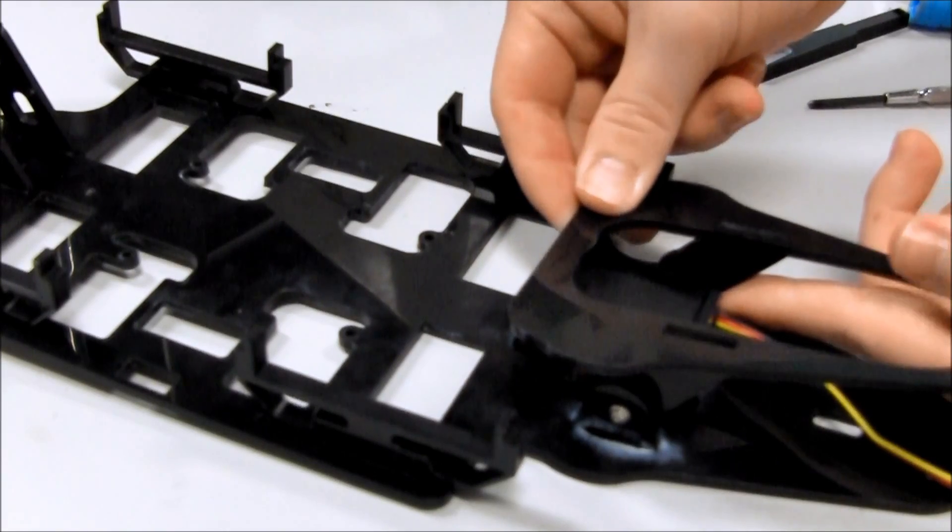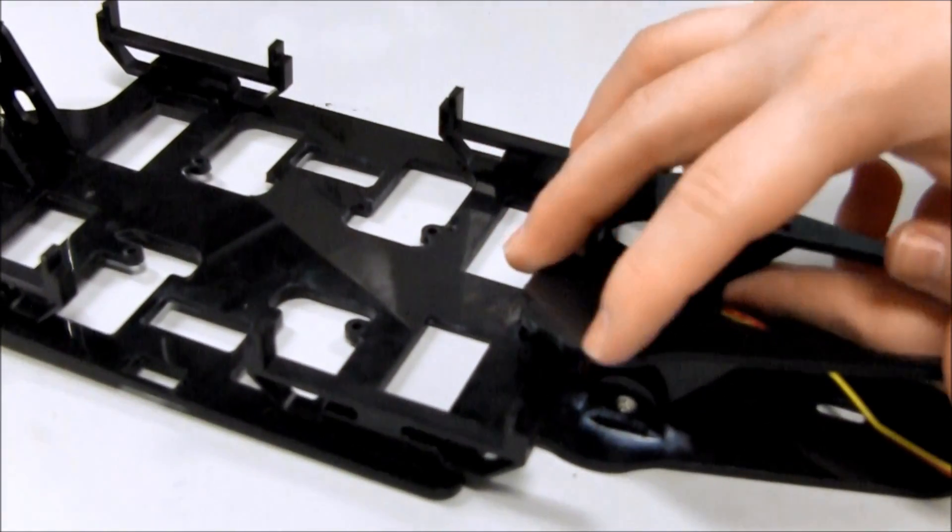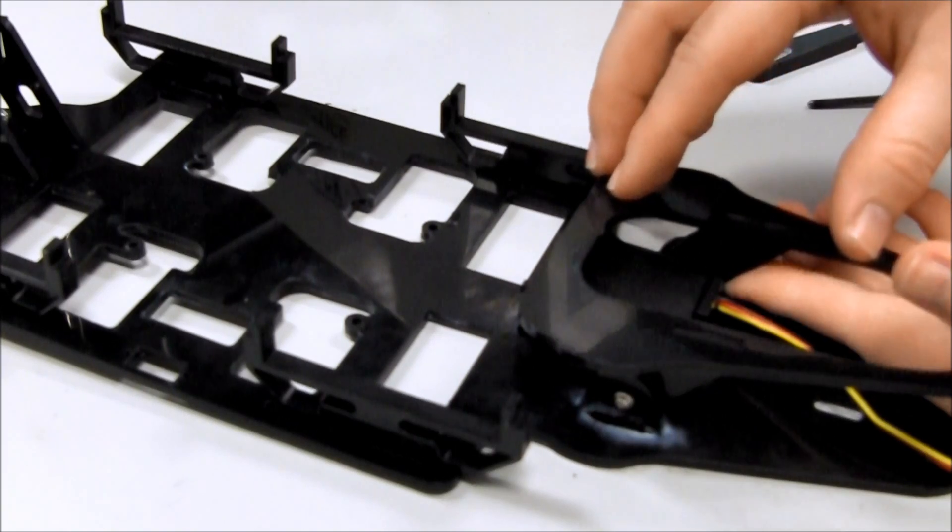Once the glue is applied, attach the head upper onto the tabs until the tab tops are flushed with the top of the head upper.